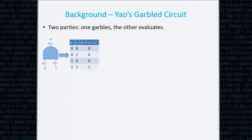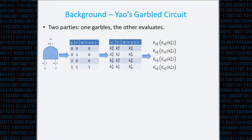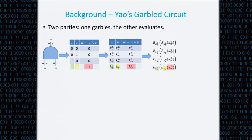We have a gate with a truth table. The garbler chooses two keys for each wire of the gate — one corresponding to the zero value and one corresponding to the one value. The garbler encrypts the keys of the output wire using the keys of the input wires. For example, for an AND gate, the key corresponding to zero of the output wire is encrypted three times under the pairs 00, 01, and 10 of the input wires, and the key one of the output wire is encrypted under the pair 11.